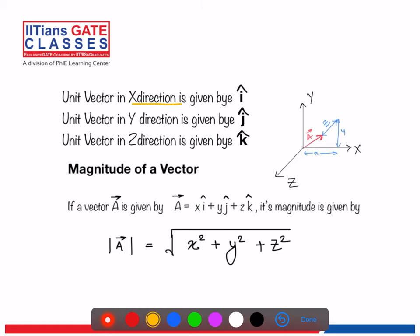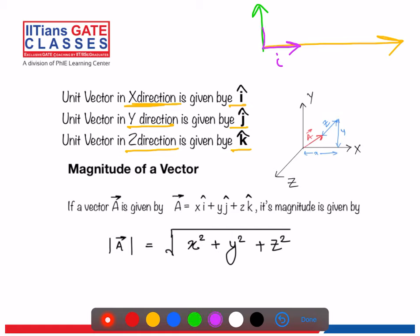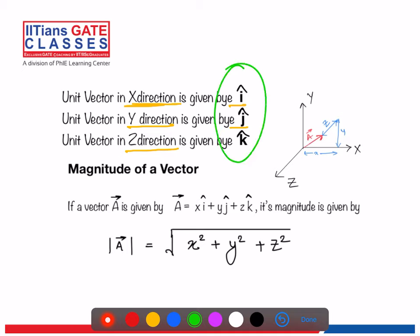The unit vector in the x direction is given by i-cap, in the y direction by j-cap, and in the z direction by k-cap. The x-axis is an infinitely long line, and i-cap is a vector of unit magnitude in that direction. Similarly, j-cap is the unit vector in the y direction, and k-cap is the unit vector in the z direction. These three are very important to remember.